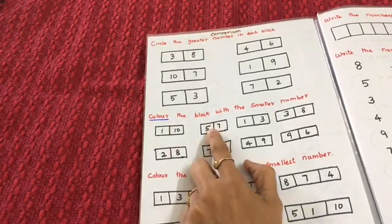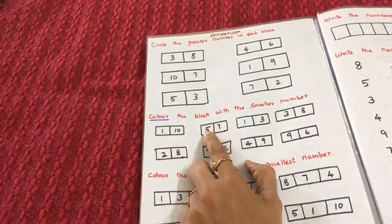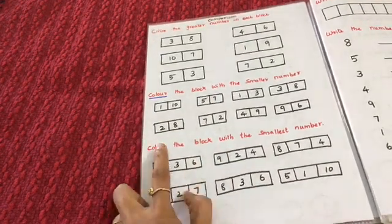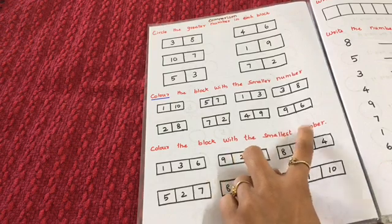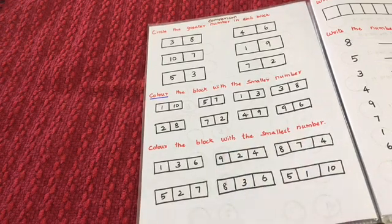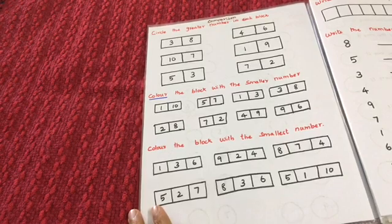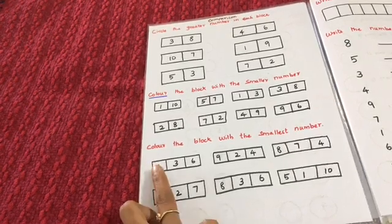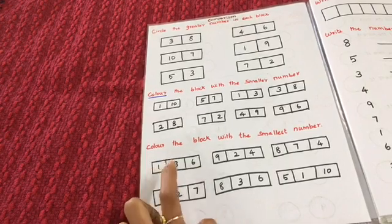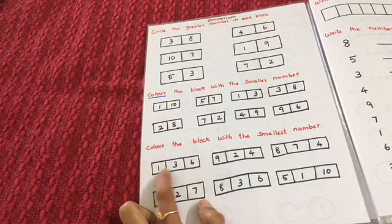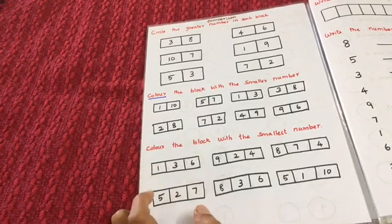He colors the smaller number with blue. For 5 and 7, five is smaller so he colors that block blue. Then for 'color the block with the smallest number,' he can use any color. For 1, 3, and 6, number 1 is the smallest, so he colors number 1.